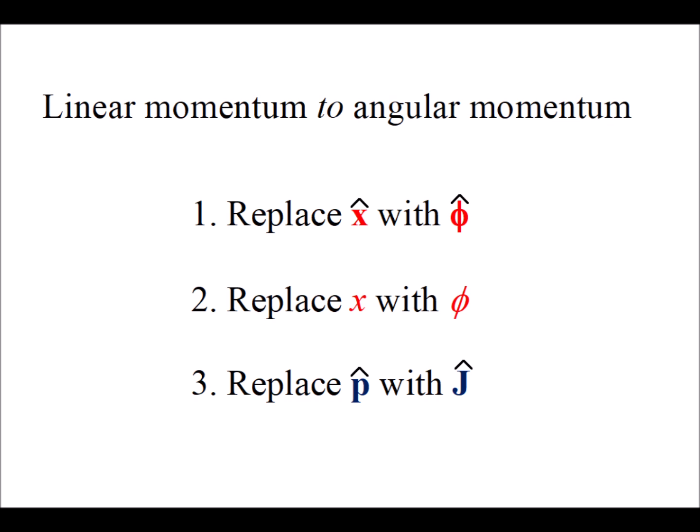Formally what we're going to do here is start with the linear momentum commutator problem and show that if we replace the position x operator with the linear momentum operator p, that's one thing. Two, we're going to replace the x coordinate with the phi angle coordinate.